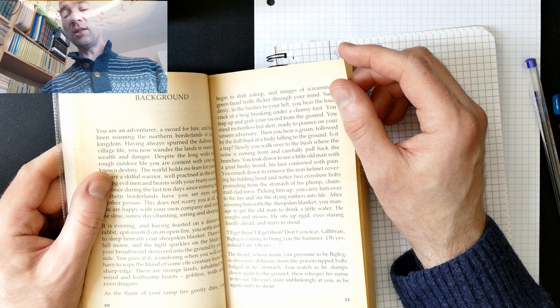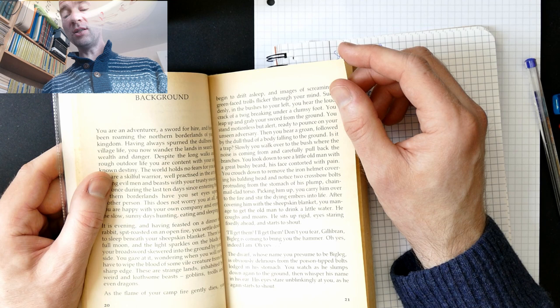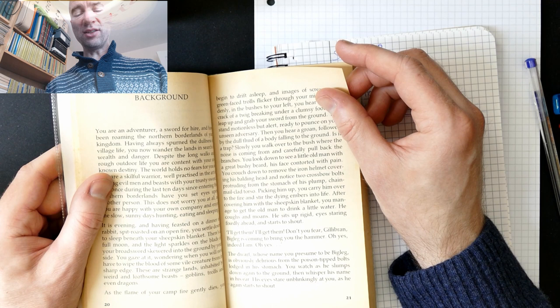You look down to see a little old man with a great bushy beard, his face contorted with pain. You crouch down to remove the iron helmet covering his balding head, and notice two crossbow bolts protruding from the stomach of his plump chainmail-clad torso. Picking him up, you carry him over to the fire and stir the dying embers into life. After covering him with a sheepskin blanket, you manage to get the old man to drink a little water. He coughs and moans. He sits up rigid, eyes staring fixedly ahead, and starts to shout.